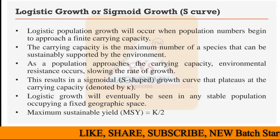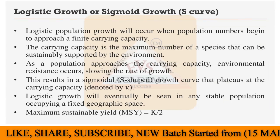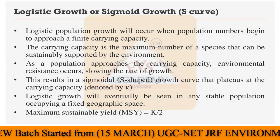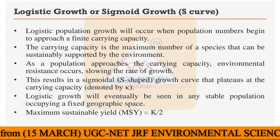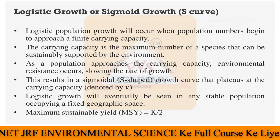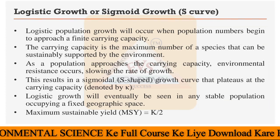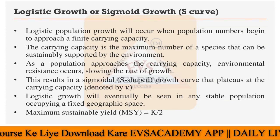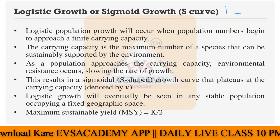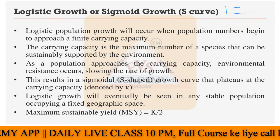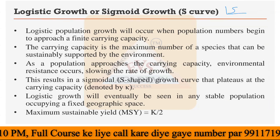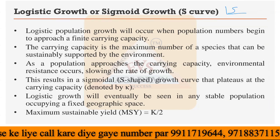The next growth model to discuss is the logistic growth or sigmoid growth model, called the S model. There are two main types of growth curves in population ecology. One is the J-curve or J growth strategy, which we have already discussed. Now we have the logistic or sigmoid growth model, and the reason it is called S is because the pattern it makes is shaped like an S.